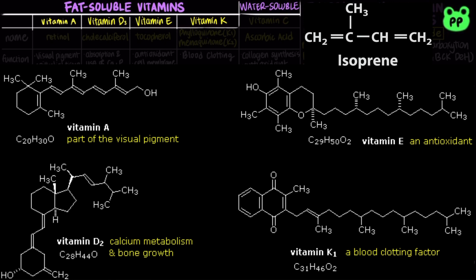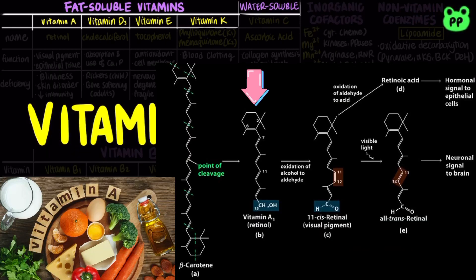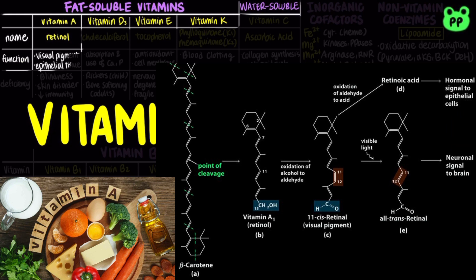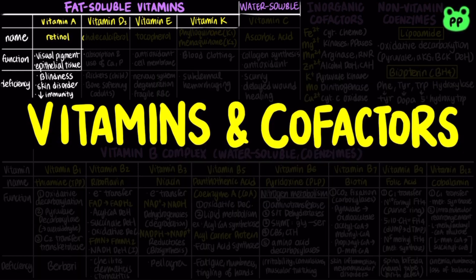Vitamins A and D serve as hormone precursors. Vitamin A1, also known as retinal, functions as a neuronal signal in vision and the maintenance of epithelial tissue. Vitamin A deficiency leads to blindness, skin disorders, and decreased immunity.